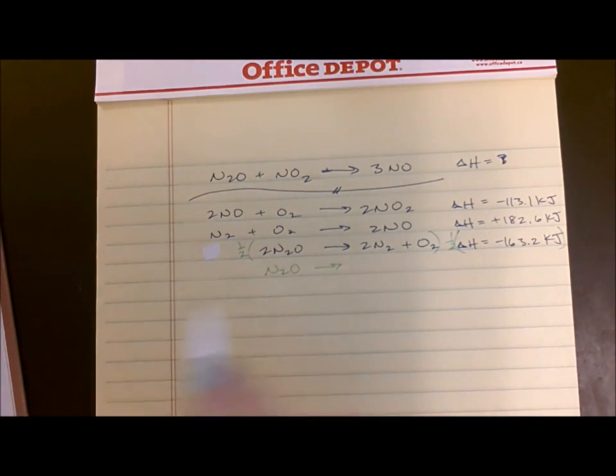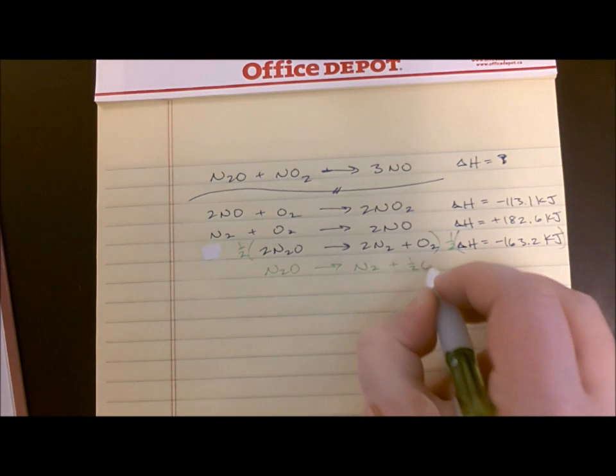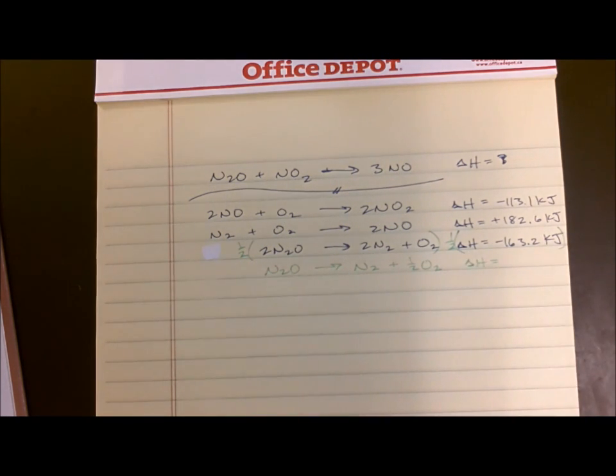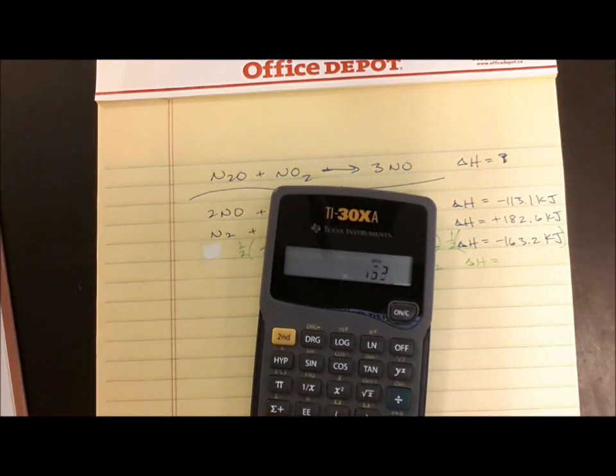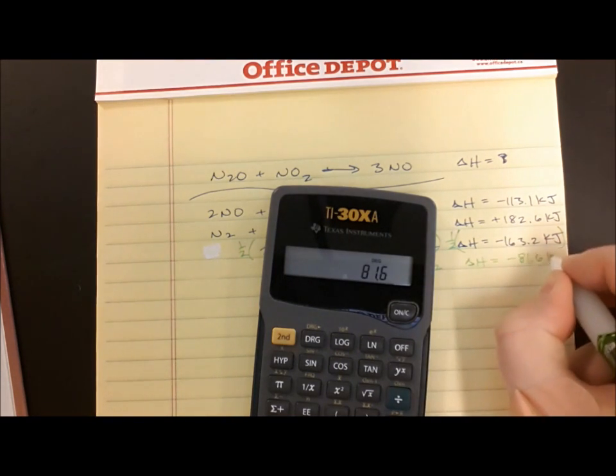N2O, and whatever you do to one side you have to do to the other. So if I have one-half of this, I've got to have half of that and half of that. So N2 plus one-half O2. The delta H for this reaction is going to be negative 163.2, half of that is negative 81.6 kilojoules.